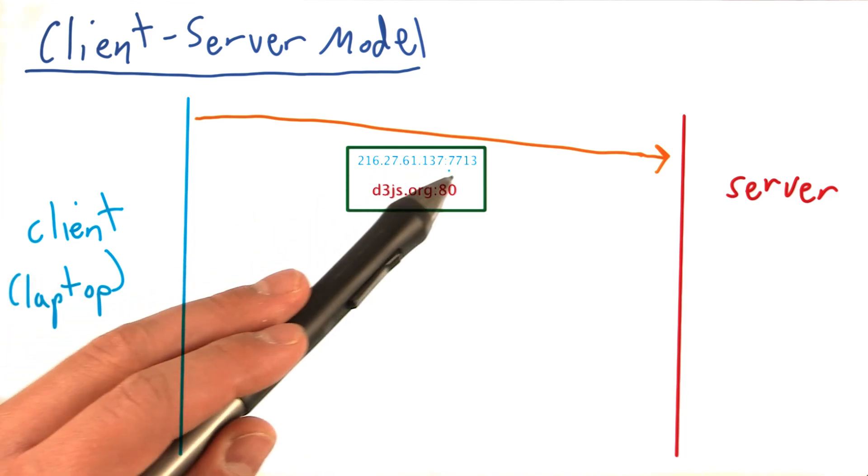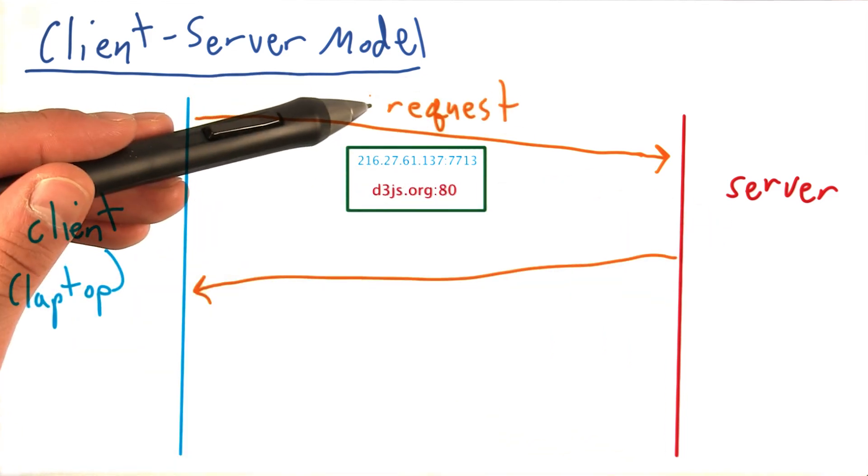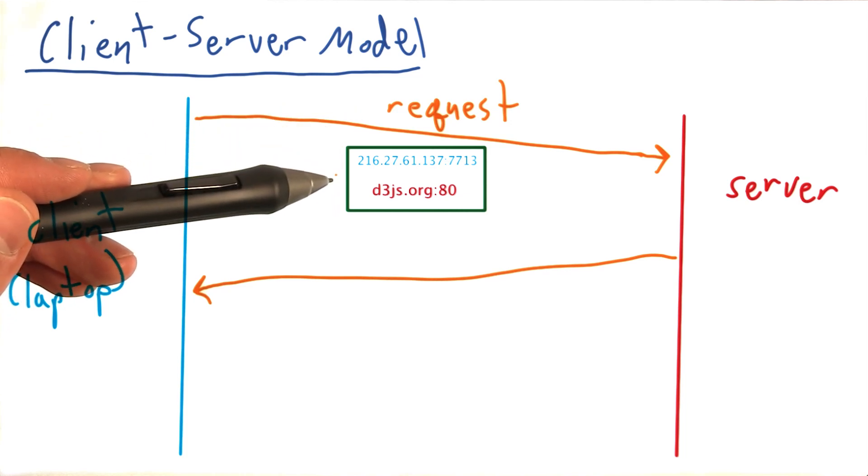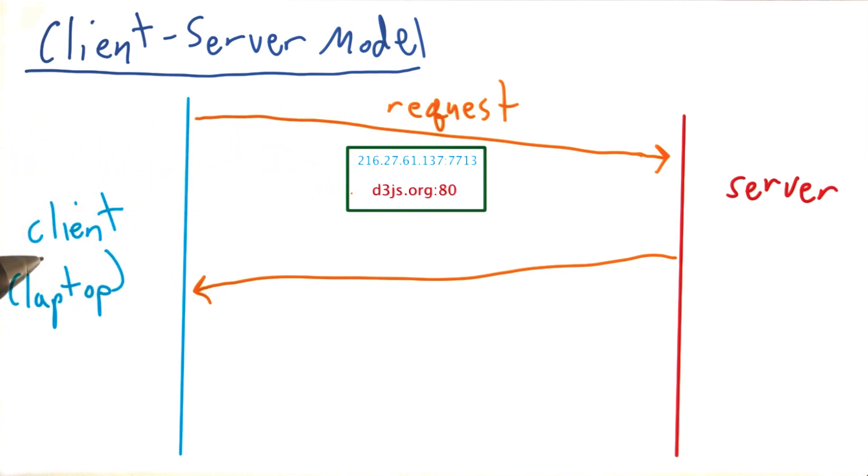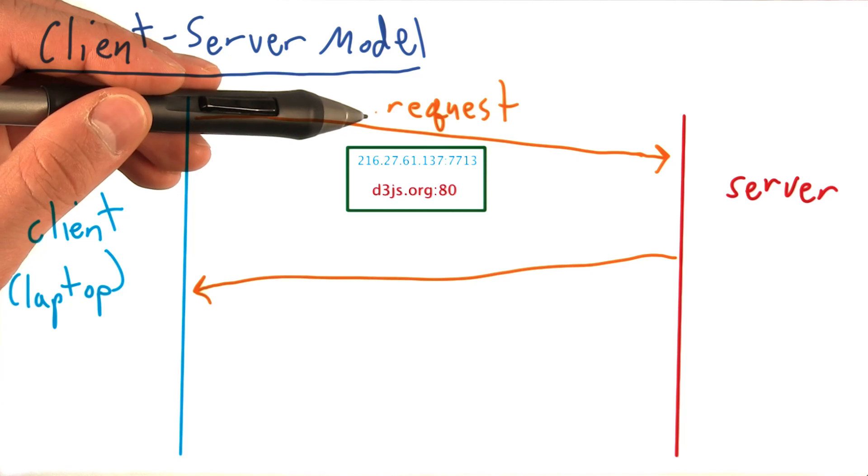Here, your friend, the server, receives this request, or the letter, for them to send your favorite book back. And this is called the request, typically.